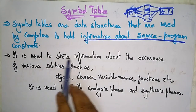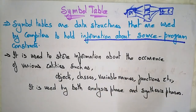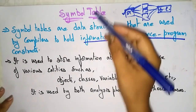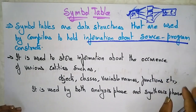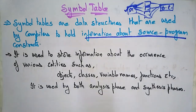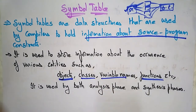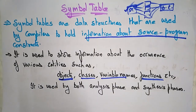The symbol table is used to store information about the occurrence of various entities such as objects, classes, variable names, functions, etc. It is used by both the analysis phase and the synthesis phase. In your source program you may come across different objects, classes, variable names, functions, structures, pointers, and interfaces. All that source program related information — the variables, data types, and everything — is stored in the symbol table.